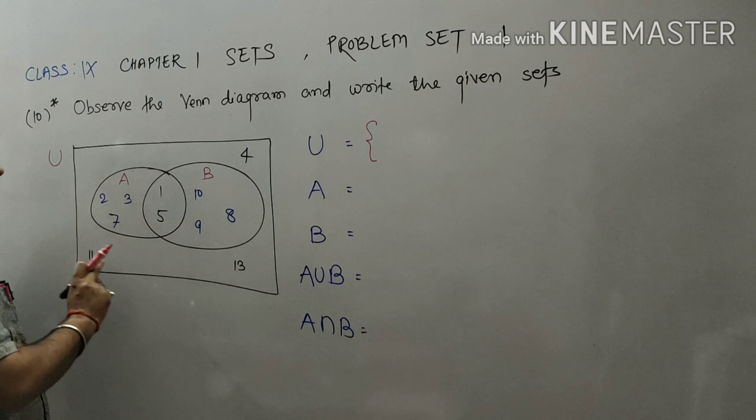Okay students, so all the elements of set B are 1, 5, 8, 9, and 10.